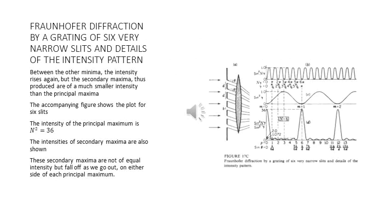We now discuss the intensity pattern for a grating of six very narrow slits. You will observe that between other minima the intensity rises again, but the secondary maxima thus produced are of much smaller intensity than the principal maxima. You can see the accompanying figure — it shows a plot for six slits. The intensity of the principal maximum is N² equal to 36. The intensities of secondary maxima are also shown; these secondary maxima are not of equal intensity.